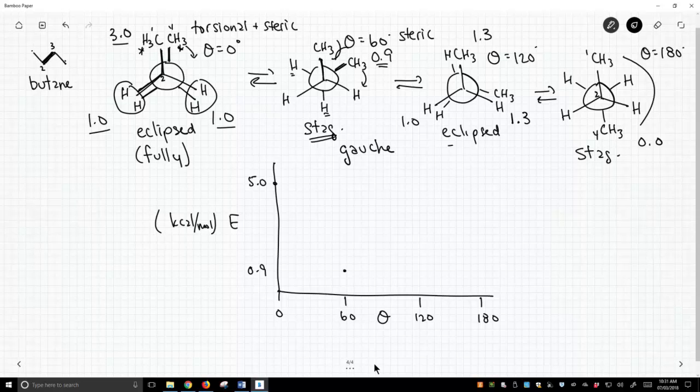Once we get to this eclipse conformation, the relative energy is 1 plus 1.3 plus 1.3, so that takes us up to 3.9. And I call this partially eclipsed. It's not a real name, but that's what people call it.